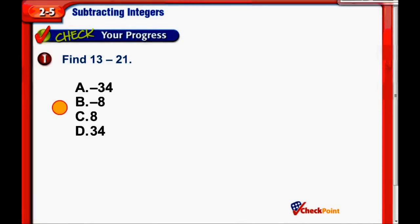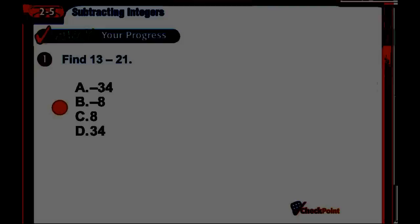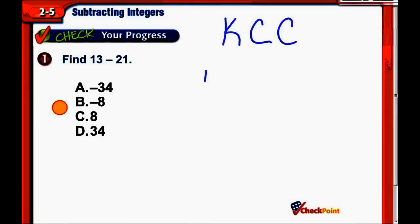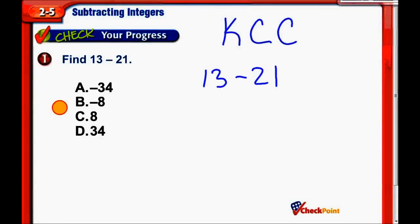So here we go with our examples. Our first one is 13 minus 21. So let's use that keep, change, change and see what that problem turns into. So instead of 13 minus 21, we're actually going to do the problem 13, keep that first number, change the sign to plus, and now we're going to change the second number. So the opposite of 21 is negative 21. So we have 13 plus negative 21.